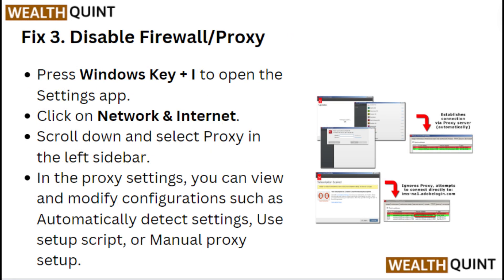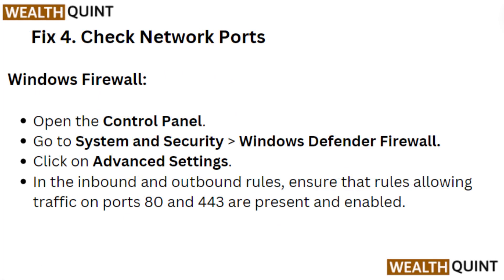Fix 3: Disable firewall proxy. Press Windows key plus I key to open the Settings app, click on Network and Internet, scroll down to select Proxy. In the proxy settings you can view and modify configuration such as automatically detected settings, use setup script, or manual proxy setup.